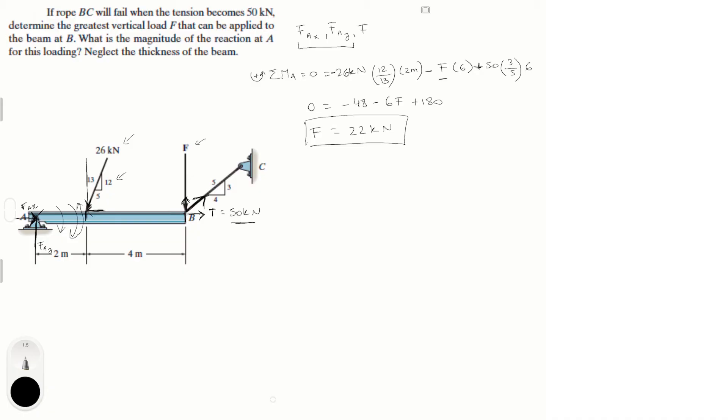So now that we've found F, we have to find the reactions at A, which should be pretty easy. Sum of the forces in the X is equal to 0, which is equal to F_A in the X, which is going to the right, minus the X component of this 26 kN force, which is 26 kN times 5 over 13.